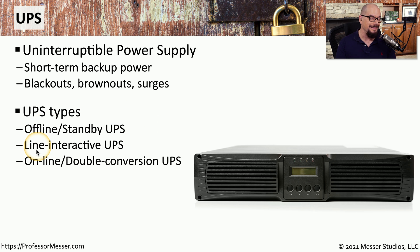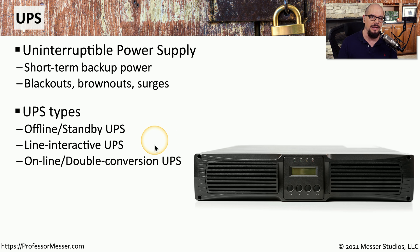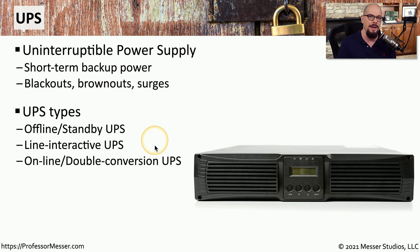Another type of UPS is a line-interactive UPS. If the voltage is slowly diminishing on the line, the UPS can slowly ramp up the amount of power being provided by the batteries. So during brownouts or times when the voltage is not at optimal levels, the line-interactive UPS can fill in the differences from the power source.